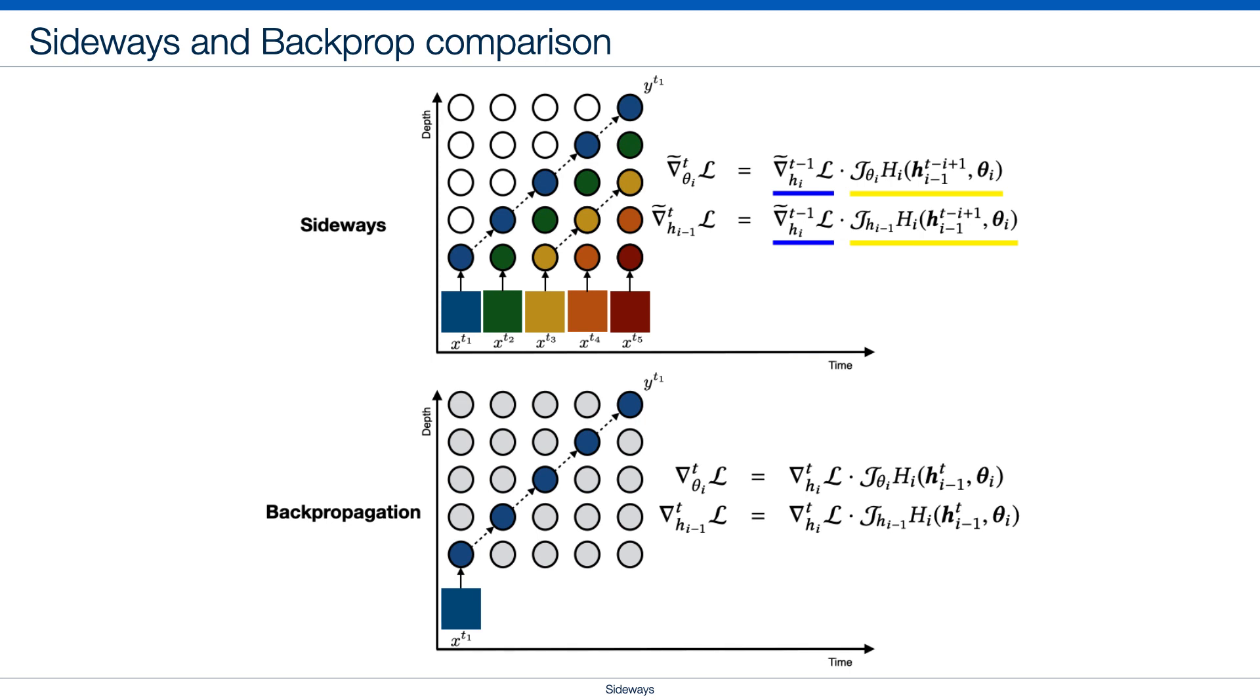Backprop computes gradients with Jacobians using the same frame. Sideways approximates gradients by combining them with Jacobians of activations originating from different frames. For instance, here, from blue and yellow frames.